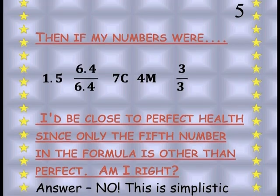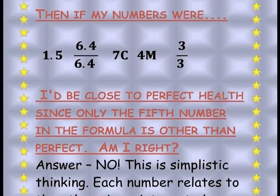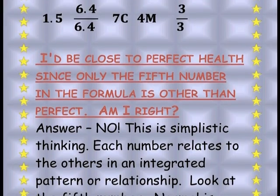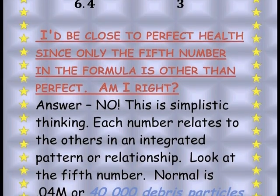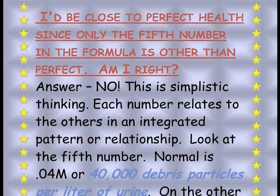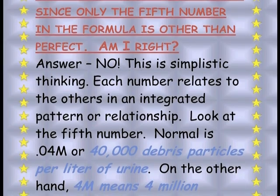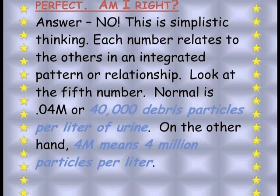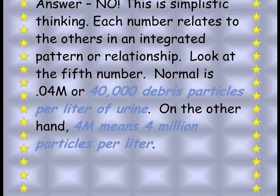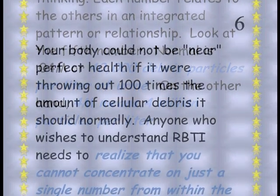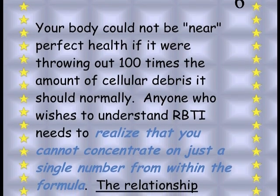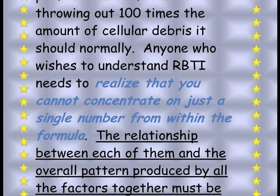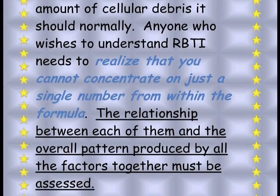Then you have 3 parts nitrate nitrogen over 3 parts ammoniacal nitrogen. If my numbers were 1.5 brix, 6.4 urine over 6.4 saliva, 7C, 4M, and 3 nitrate over 3 ammoniacal, would I be very close to perfect health since only the fifth number is other than perfect? No — this is simplistic thinking. Each number relates to the others in an integrated pattern. Focus on that fifth number: normal is 0.04M or 40,000 debris particles per liter of urine; 4M means 4 million particles per liter. Your body could hardly be near perfect health if it were throwing out 100 times the normal amount of cellular debris. You cannot concentrate on just a single number from within the formula.